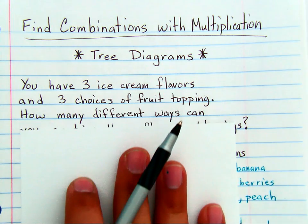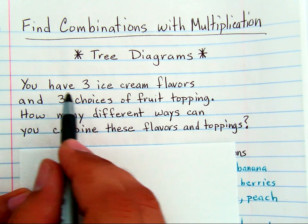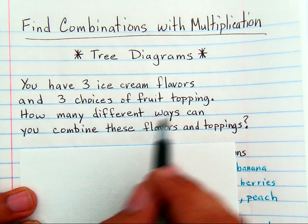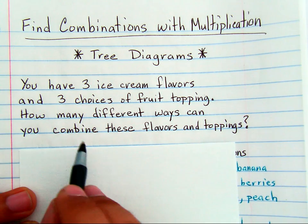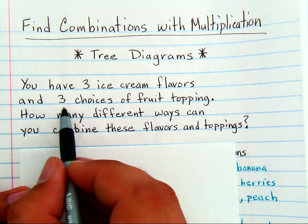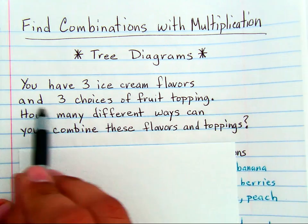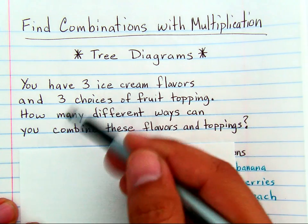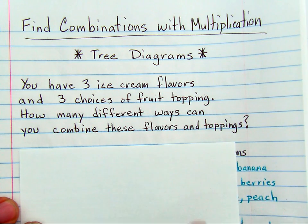If you have a problem that we've already seen before — you have three ice cream flavors and three choices of fruit topping — how many different ways can you combine these flavors and toppings so that you only have one flavor of ice cream and one fruit topping?